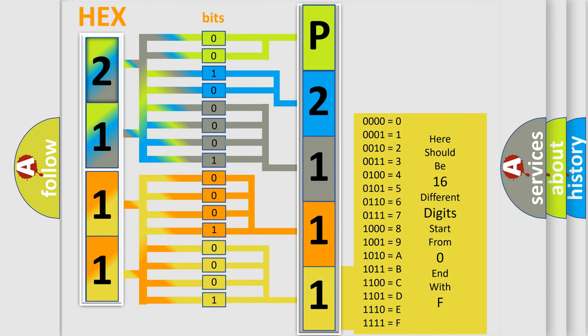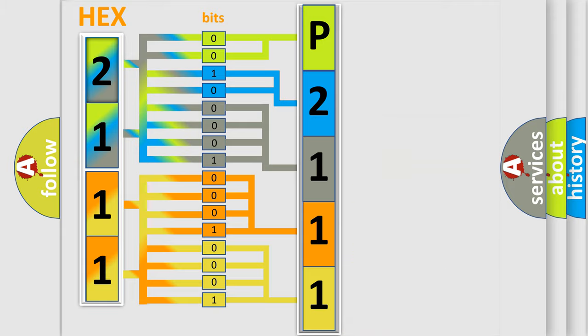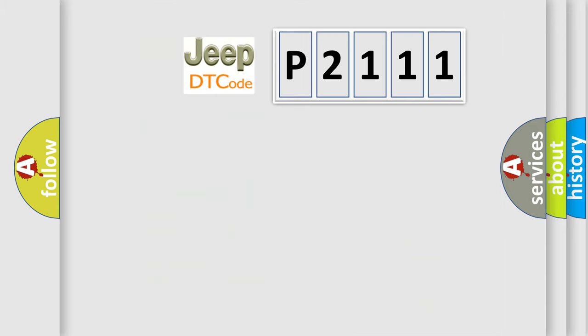We now know in what way the diagnostic tool translates the received information into a more comprehensible format. The number itself does not make sense to us if we cannot assign information about what it actually expresses. So, what does the diagnostic trouble code P2111 interpret specifically for Jeep car manufacturers?